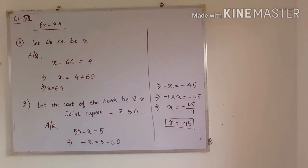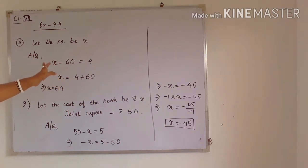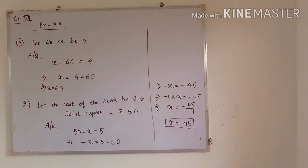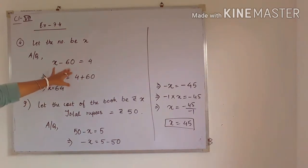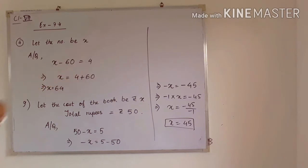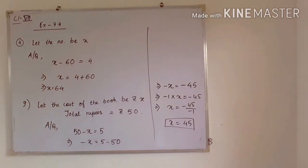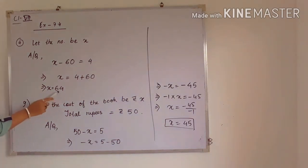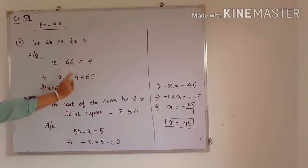Let the number be x. It is given that if we subtract 60 from it, the result will be 4. So according to the condition, we can write x minus 60 is equal to 4. So x will be 4 plus 60, and the final answer will be 64. That means 64 is the number from which if we subtract 60, we will get 4.